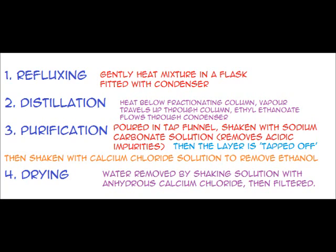Stage 3: Purification. The product is poured into a tap funnel and shaken with sodium carbonate solution, which removes the acidic impurities and is tapped off. Then it is shaken with concentrated calcium chloride solution to remove ethanol. Stage 4: Drying. The water is removed by shaking the solution with anhydrous calcium chloride. Stage 5: Filtration.